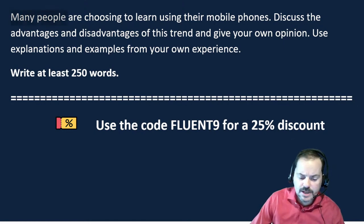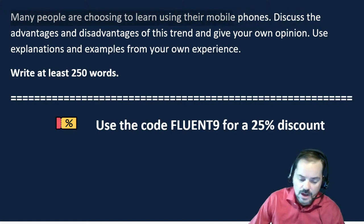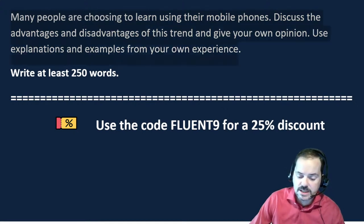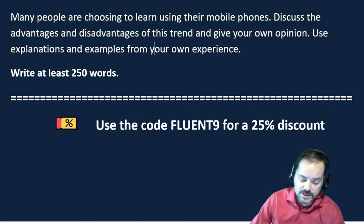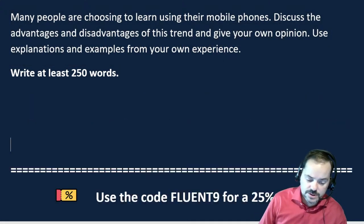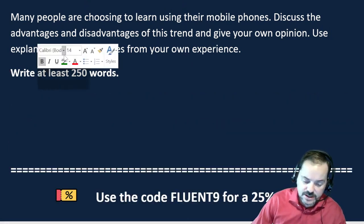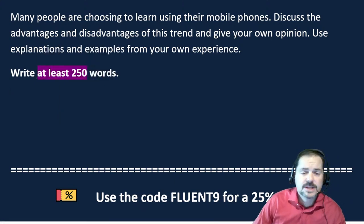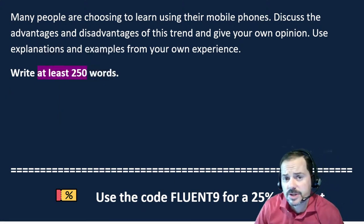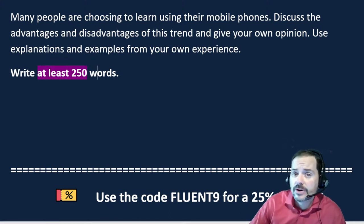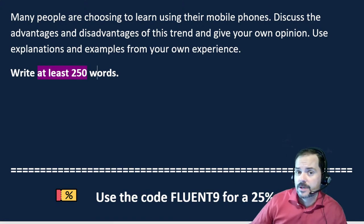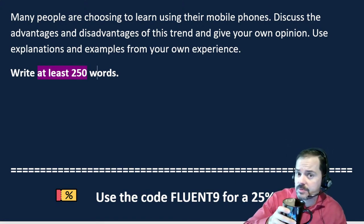Many people are choosing to learn using their mobile phones. Discuss the advantages and disadvantages of this trend and give your own opinion. Use explanations and examples from your own experience. Write at least 250 words — that is the minimum. Students going for band 7 or higher will be writing more than 250 words, closer to 300 or 350.